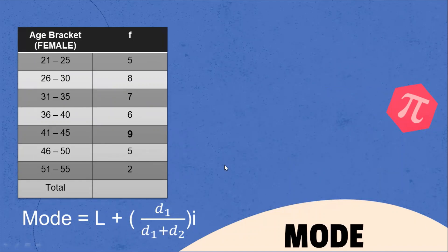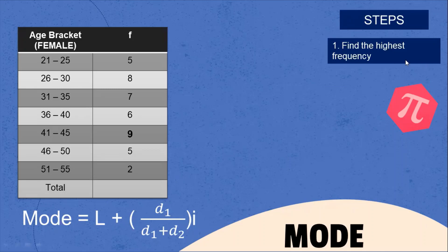How do we solve for the Mode Group Data? First step: find the highest frequency. On this given example, the highest frequency is 9.